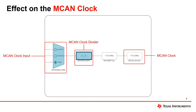So how did all of these changes made to syspll impact the MCAN clock? Zooming in, we can now see that the syspll is a direct input of the sysclock, which is a direct input of the MCAN clock, so it's now at 119 MHz, which is within the acceptable range. At this point, if we wanted to modify just the MCAN clock, we can do so using the MCAN divider.